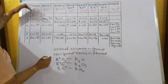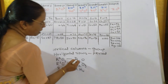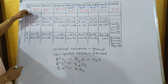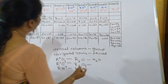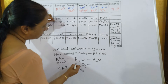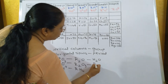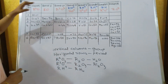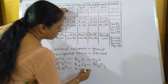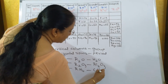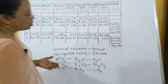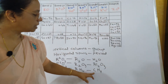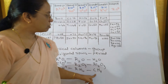For R2O, if we take hydrogen, replacing R with H we get H2O. For R2O3, taking aluminium and replacing R with Al gives Al2O3 — the oxide of aluminium. For RH4, taking carbon and replacing R with C gives CH4. So H2O is water, Al2O3 is aluminium oxide, and CH4 is methane.